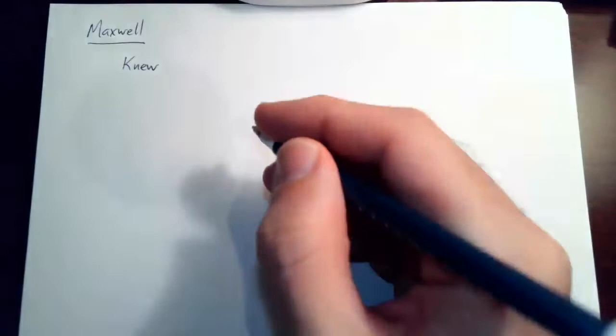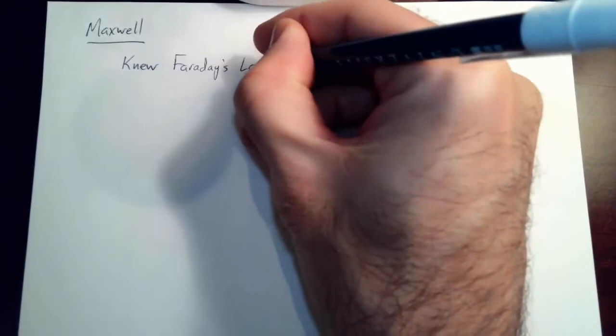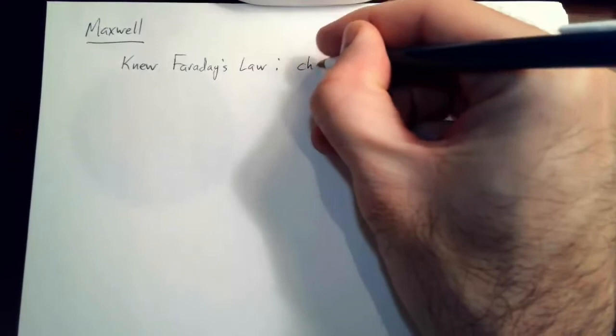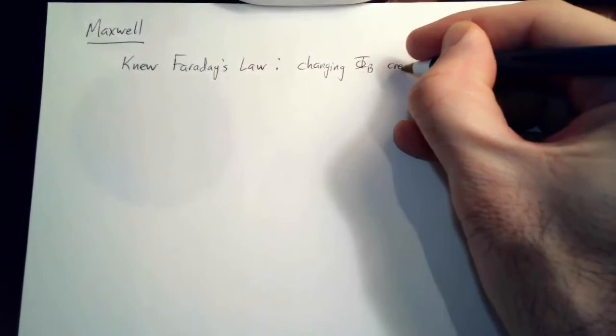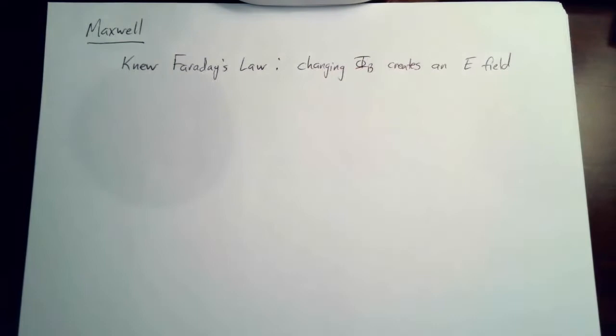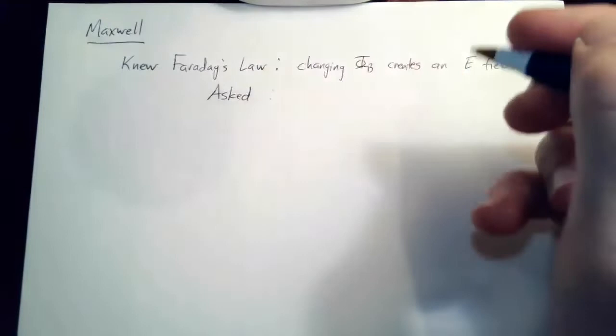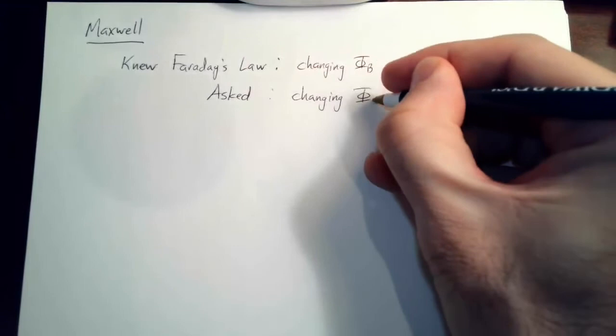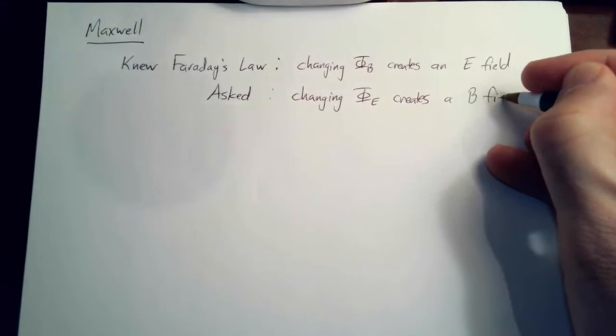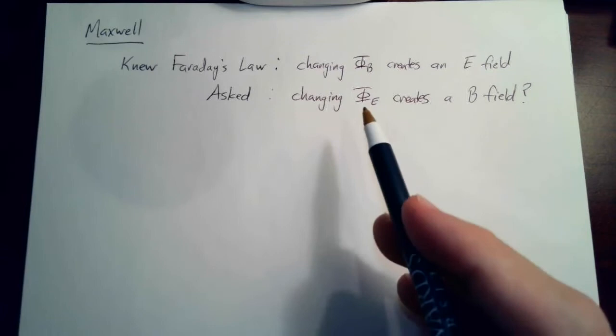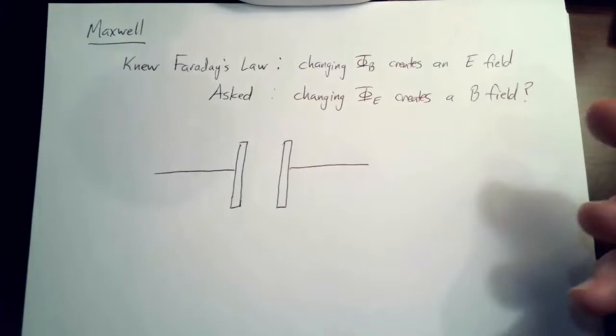That's where the genius of Maxwell came in. He was a Scottish physicist working in the latter half of the 19th century — James Clerk Maxwell. He knew about Faraday's discovery: Faraday's law tells us that a changing magnetic flux creates an E-field. Maxwell asked: could it be that a changing electric flux creates a B-field? So let's try adding this to Ampere's law and see what happens.